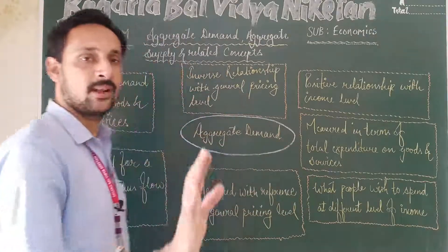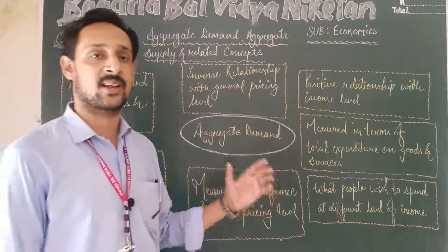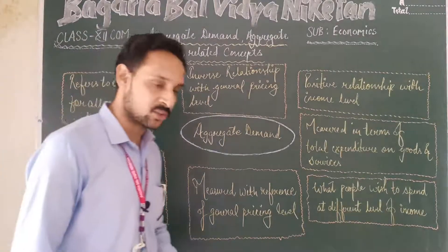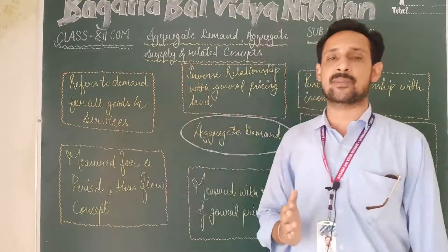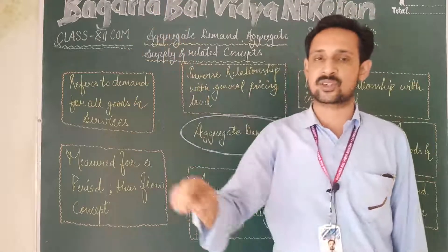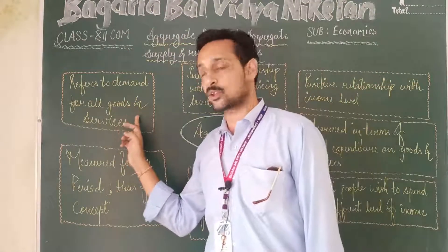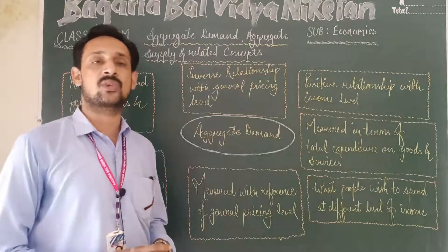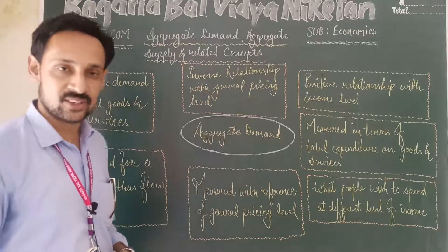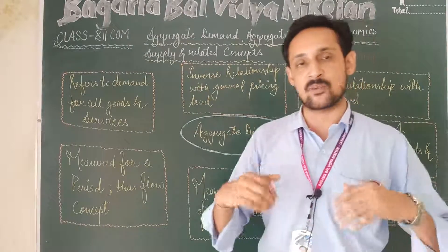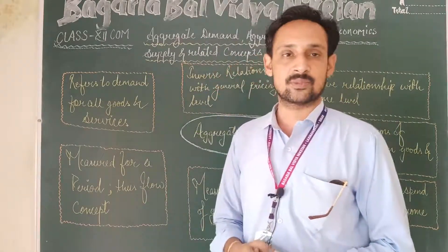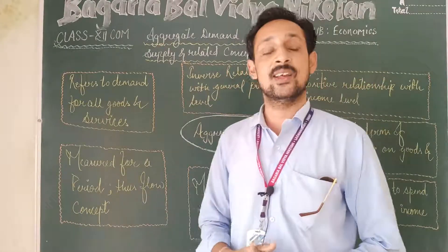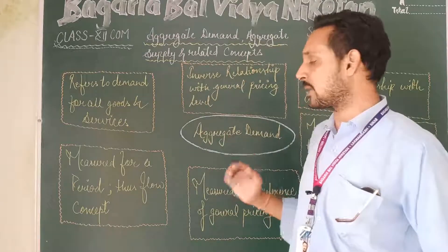Now let us understand aggregate demand. It refers to the demand for all goods and services — not individual demand for any particular good, but demand covering all goods and services. It is measured for a period, generally an accounting period. The sum total of planned expenditure that people wish to spend — or utilize their income on — for various types of goods and services during an accounting year is what we call aggregate demand.